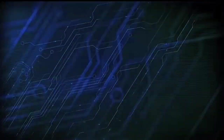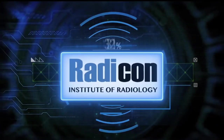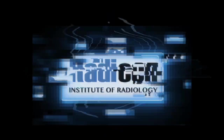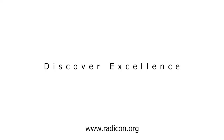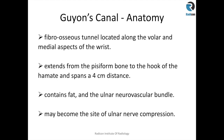You are watching Reticon. Guyon's canal is a fibro-osseous tunnel located along the volar and medial aspect of the wrist. It extends from the pisiform bone to the hook of the hamate and spans a 4 cm distance. It contains fat and the ulnar neurovascular bundle, and it may well be the site of ulnar nerve compression.